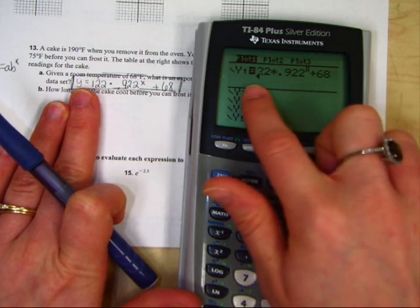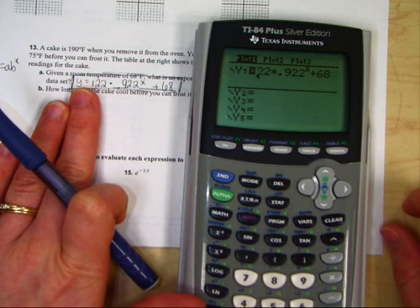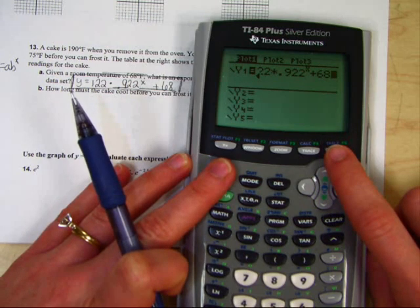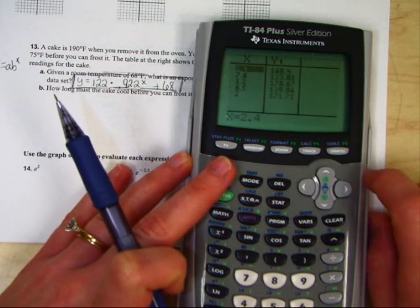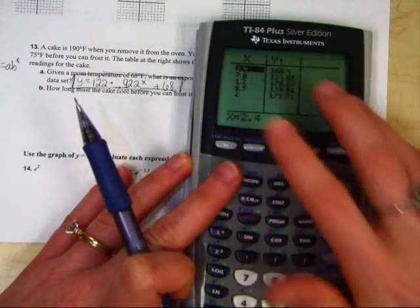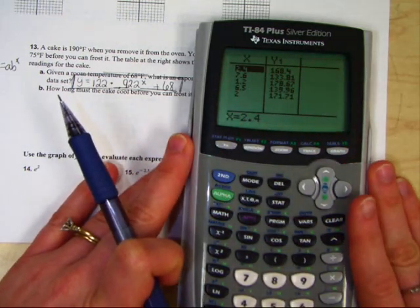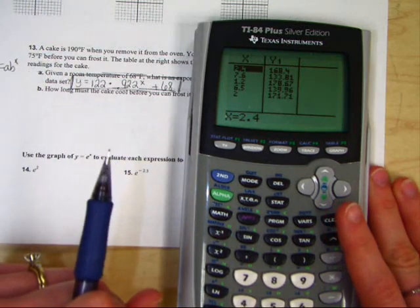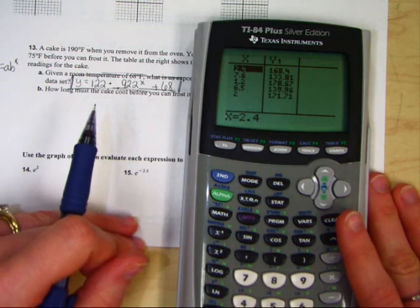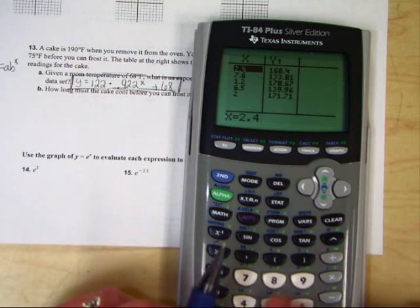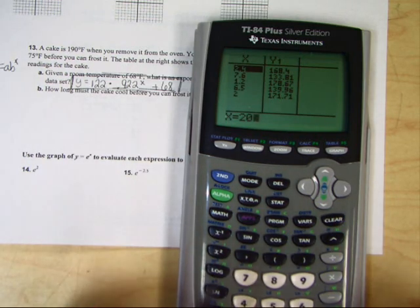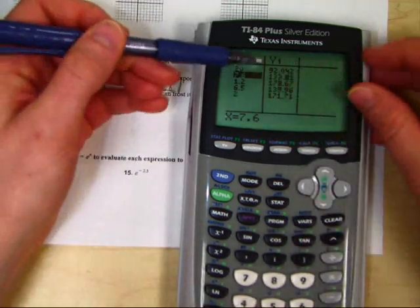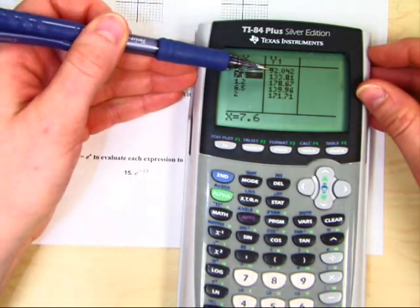Now that you have your equation in y equals, you hit second, graph, which actually takes you to the table function. As long as your calculator is set up for the independent to be ask, we just take a guess. Now remember, we need it to be 75 degrees. So I'll take a guess. What does it look like after 20 minutes? So I just type in 20, hit enter. After 20 minutes, your cake is still 92 degrees.